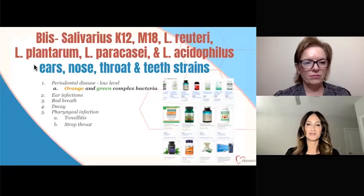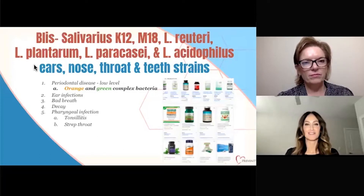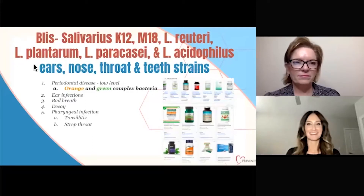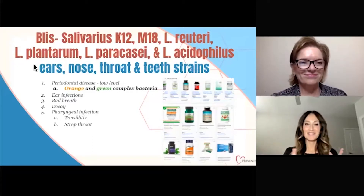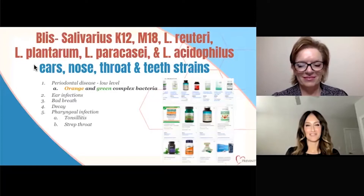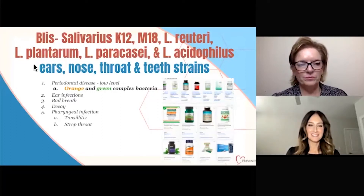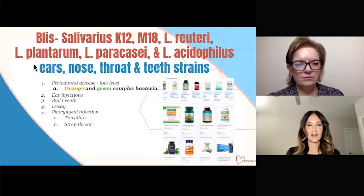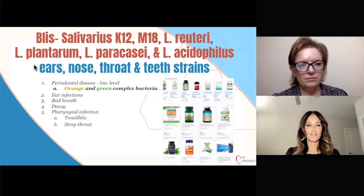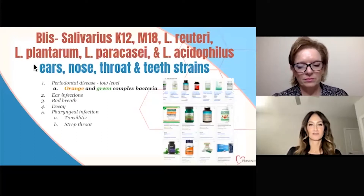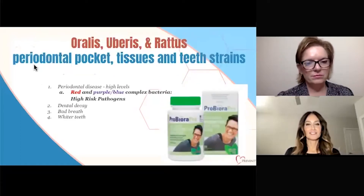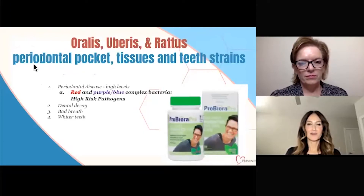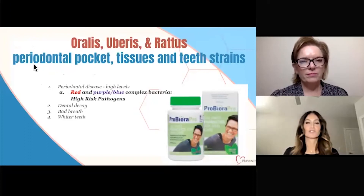What you need to know is when would you use these. A lot of patients — and we hear this with gut health as well — say they're already on a probiotic. Now we're talking about oral probiotics, and that's even more specific. These species are only for ear, nose, and throat. And then we say teeth, which means decay strains — those are the orange and green complex bacteria. These species are going to fight those orange and green zones. When we're talking about oralis, uberis, and radius, these strains are very important because now we're talking about periodontal disease — the periodontal pocket and the tissues.